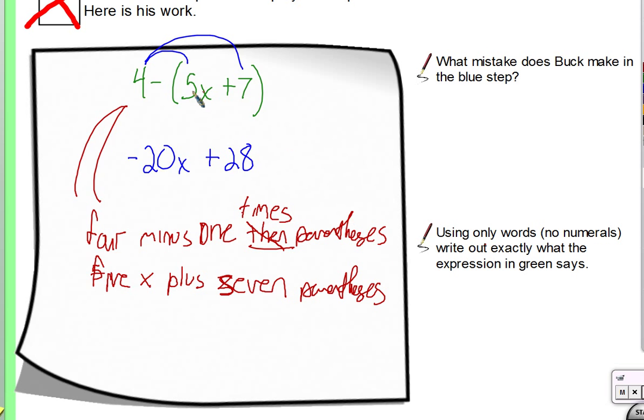If I was supposed to distribute the 4, if I was supposed to distribute the 4, then when I started to read it, it would say 4, what would it say after that? 4 times 5x plus 7. Does it say that? Is 4 multiplied by the parentheses? No. Am I running into the ground? This point? Do you see what I'm saying? 4 is not being multiplied by the parentheses. It doesn't say 4 times the parentheses. If we want to read it with times in there somewhere, this would be good. 4 minus 1 times the parentheses.